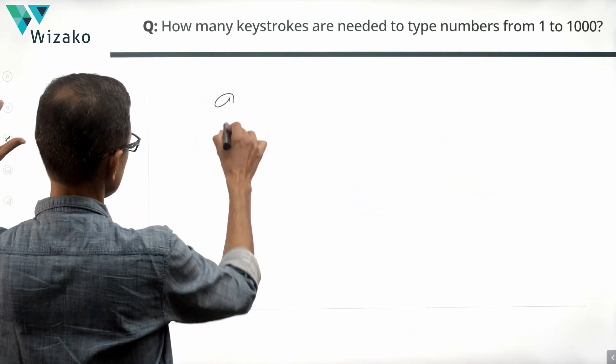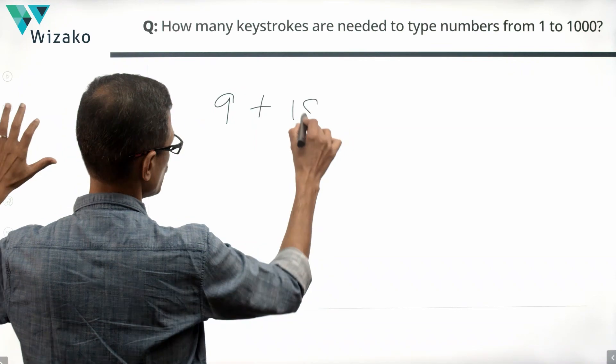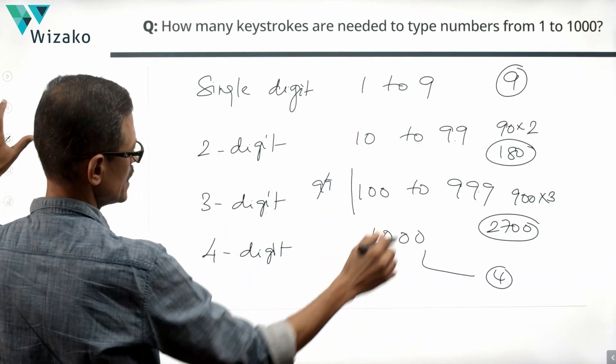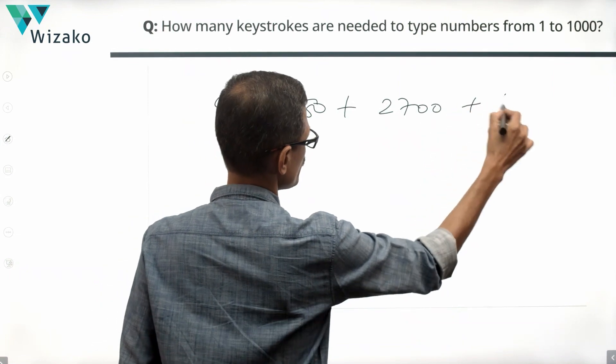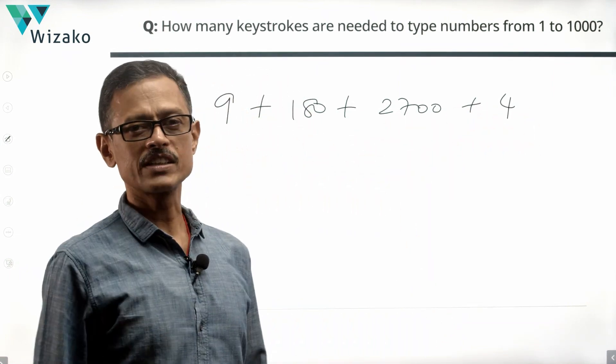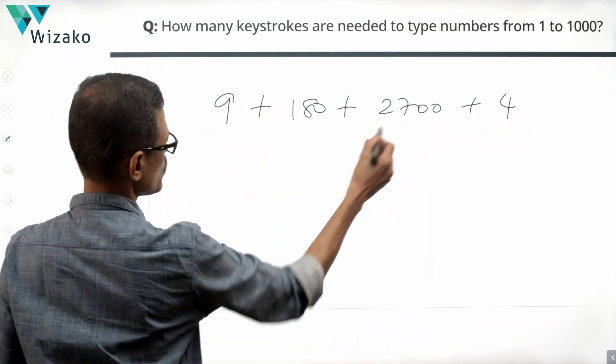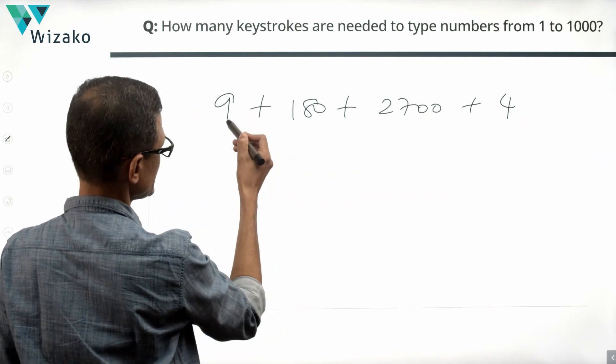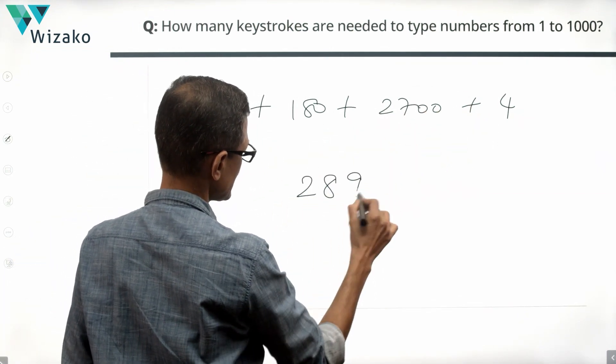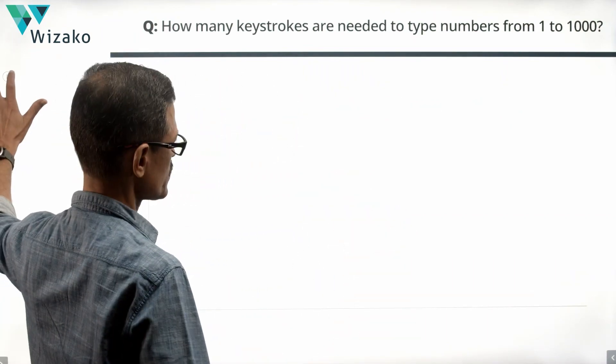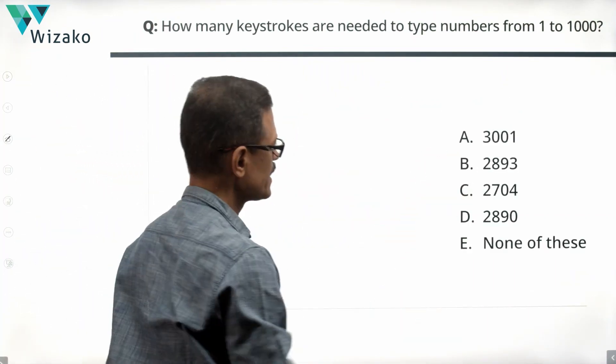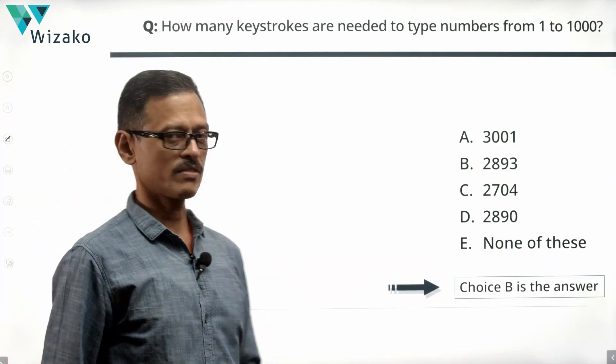So number of keystrokes required is 9 for the single digit numbers, 180 for the two digit numbers, 2700 for the three digit numbers, and four for the single one four digit number that we have. So this is 2880, 2889 plus 4, 2893 keystrokes is what we will require. Take a look at the answer options. Number of keystrokes 2893. Choice B is the correct answer to this question.